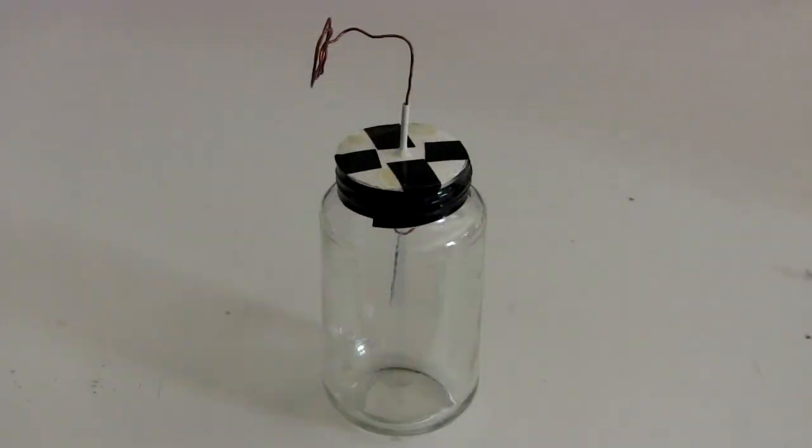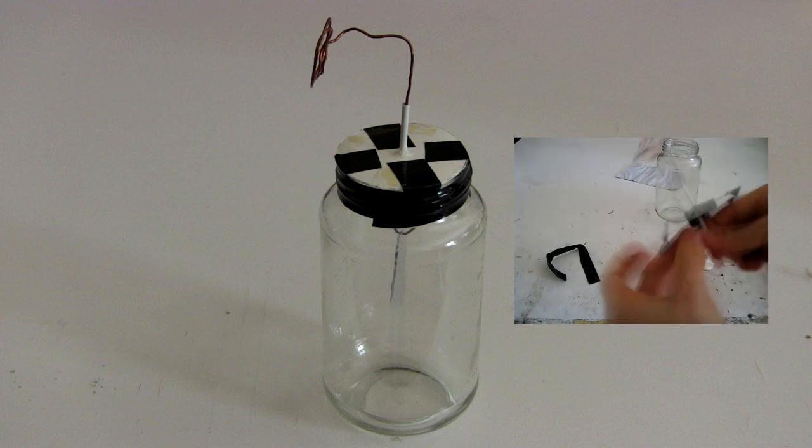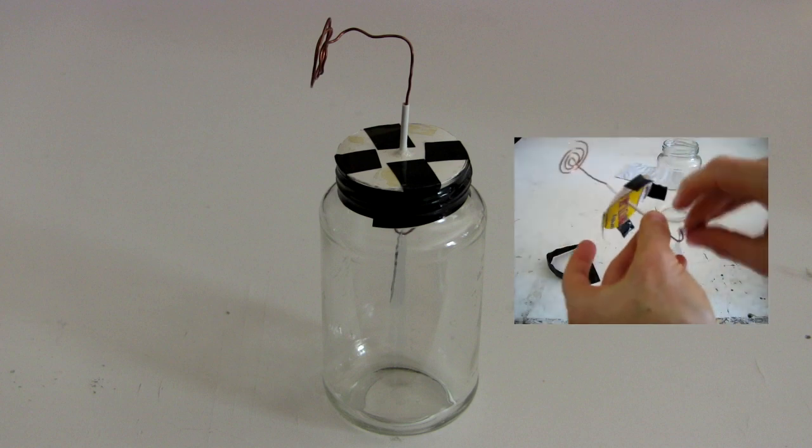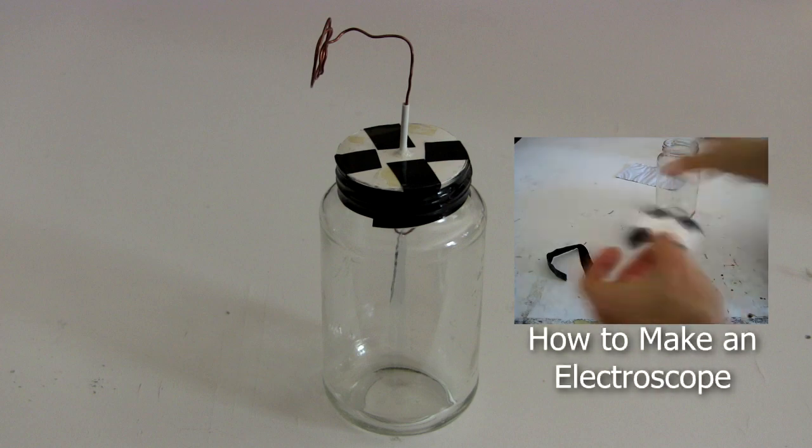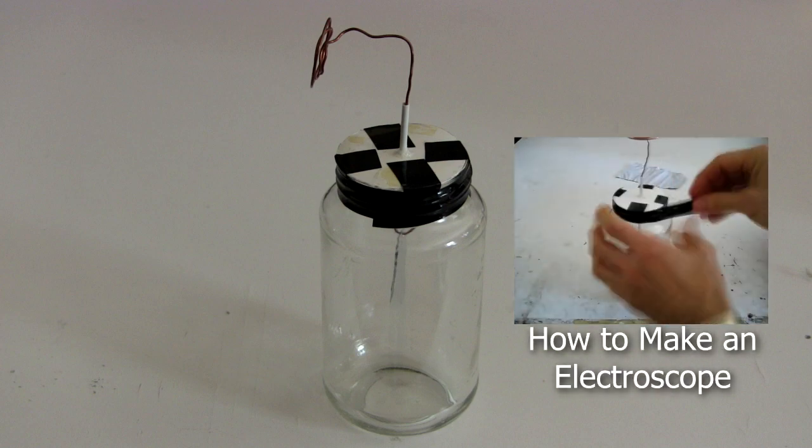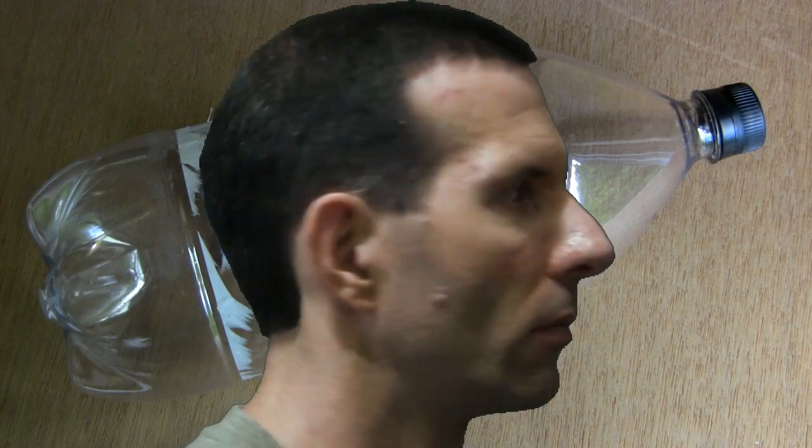You'll need an electroscope which you can quickly build using parts from around the house. This one's made with a glass jar, a bit of aluminum foil, a stiff bare wire, a plastic cover and a plastic tube and some tape. In my how to make an electroscope video I show you how to make this one. You'll also need a plastic coke bottle and a head of hair.